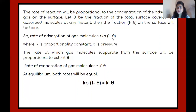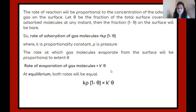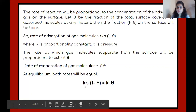If theta is the fraction of the total surface covered by the adsorbed molecule, then 1-theta will be the uncovered or bare part. The rate of adsorption can be given by K·P·(1-theta), where K is the proportionality constant, P is the pressure, and 1-theta is used because adsorption can only take place at the bare part where gas is not present. The rate of evaporation of the gas molecule will be equal to K'·theta, since evaporation occurs from the covered part. At equilibrium, the rate of evaporation will be exactly equal to the rate of condensation.